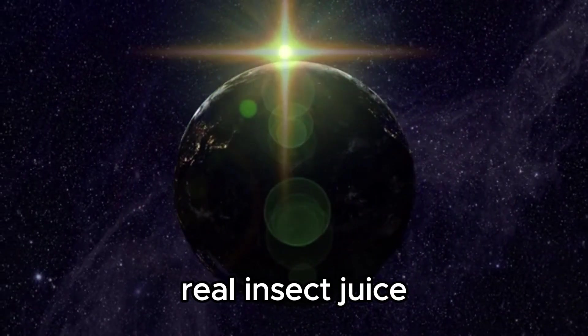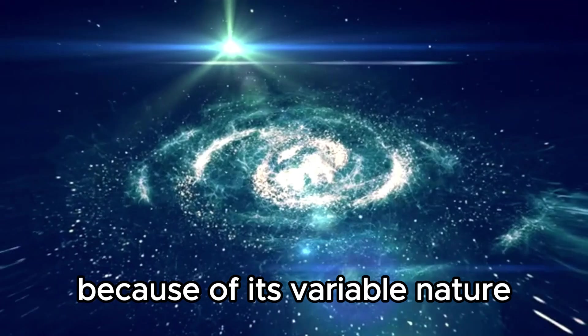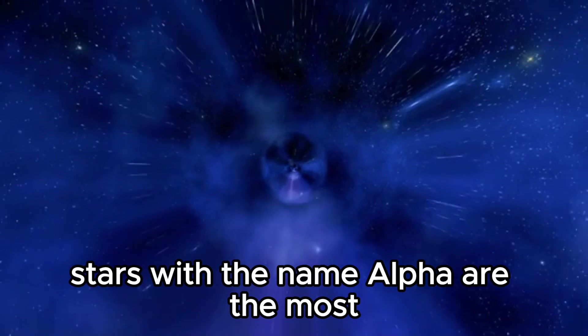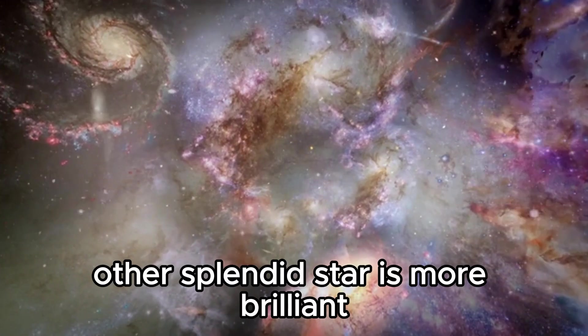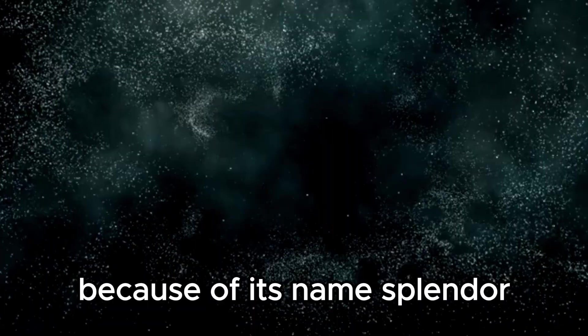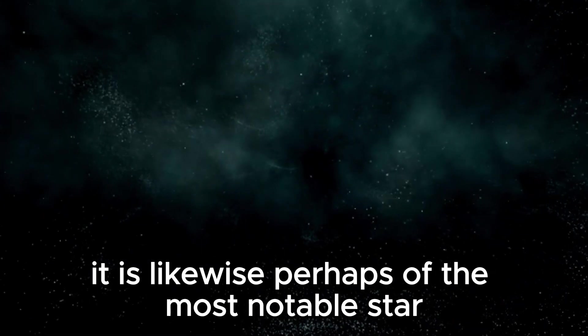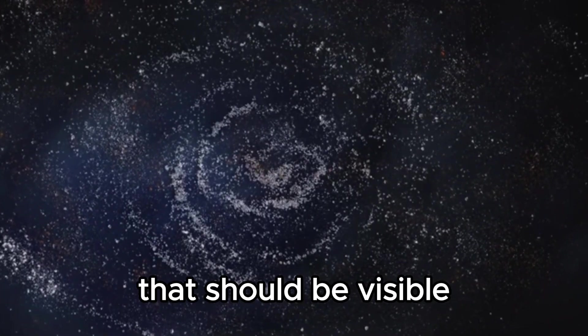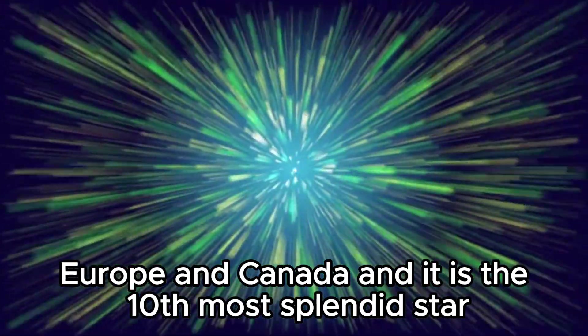Betelgeuse is a charming object for star studies and observations because of its variable nature as well as its odd name. Regularly stars with the name Alpha are the most splendid in their star groupings, despite the fact that Rigel Orionis, Orion's other splendid star, is more brilliant. Betelgeuse is Alpha Orionis because of its name, splendor, size, and ruddy shade. It is perhaps one of the most notable stars. Betelgeuse is the seventh most splendid star that should be visible from the vast majority of North America, Europe, and Canada, and it is the tenth most splendid star generally overhead.